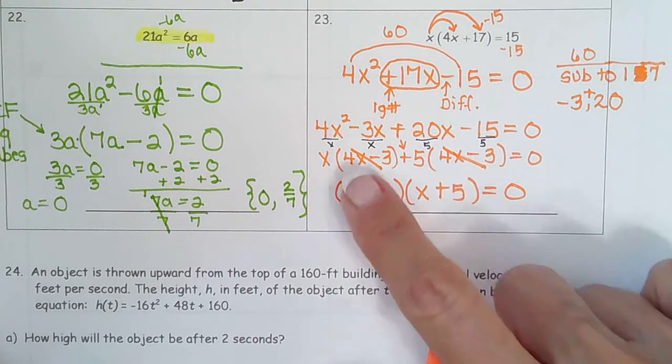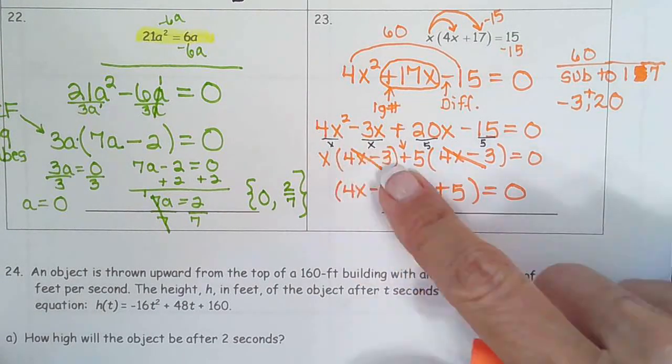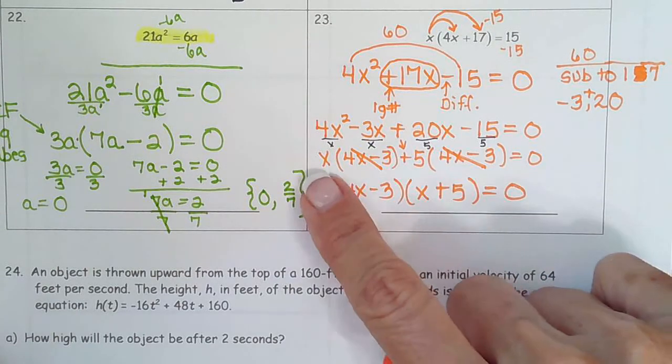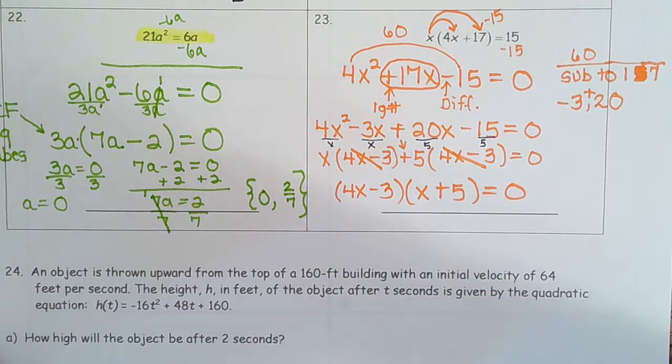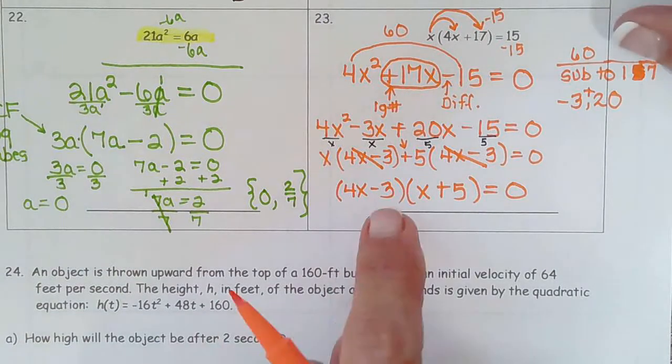Our matching binomial, this is the third GCF is 4x minus 3. When I crossed it out I was left with x plus 5. And then I have to remember this is not just factoring. The directions say solve.